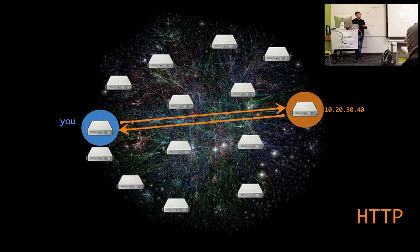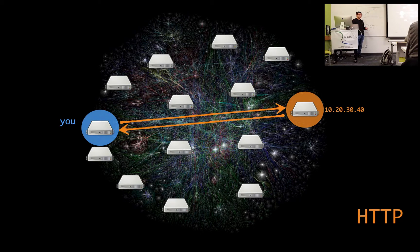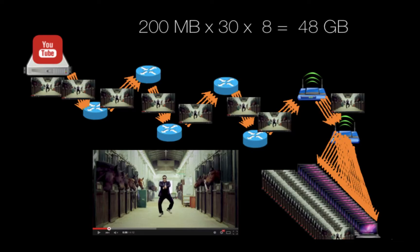To motivate the idea for IPFS, let's start very basic with how the web works today when we use a browser with HTTP. When you go to get something, you connect to the host and request your data. It's not very efficient if multiple people in one location are requesting the same item — you're all going to the host. For example, if 30 of us are trying to get one YouTube video that's 200 megabytes and we're 8 hops away from YouTube, that's 40 gigabytes of traffic being transferred across the network.